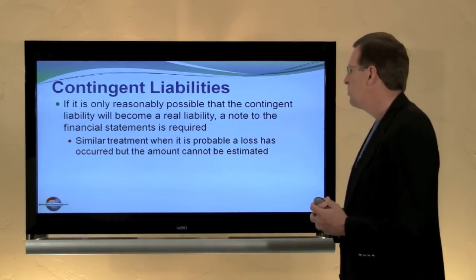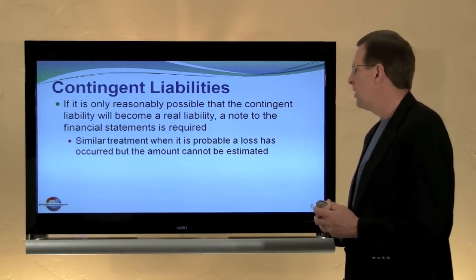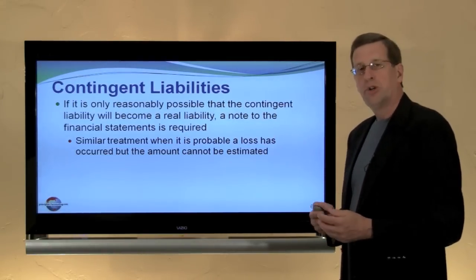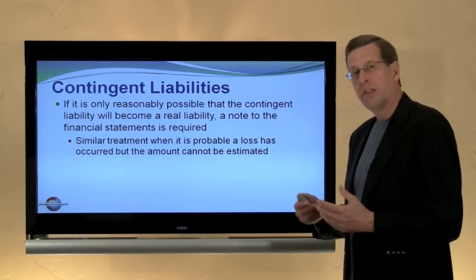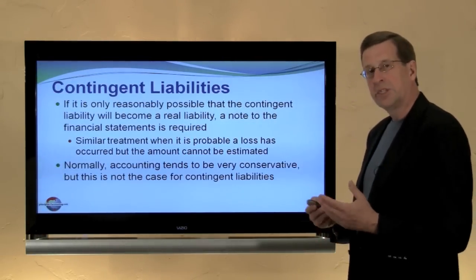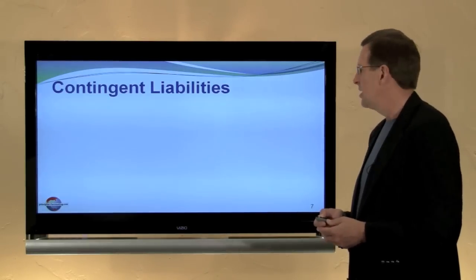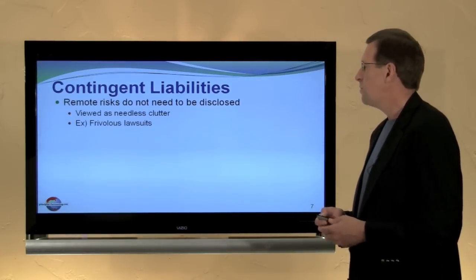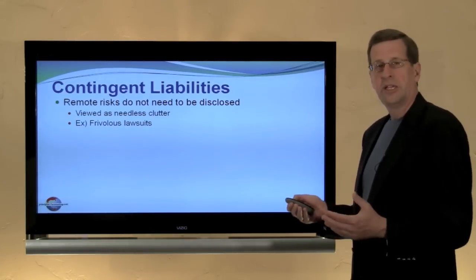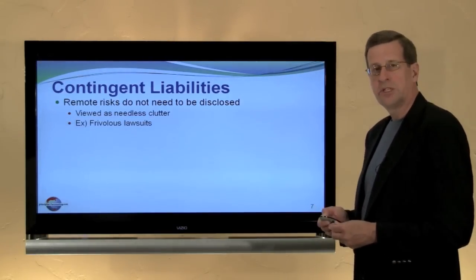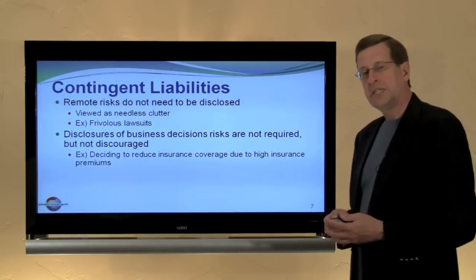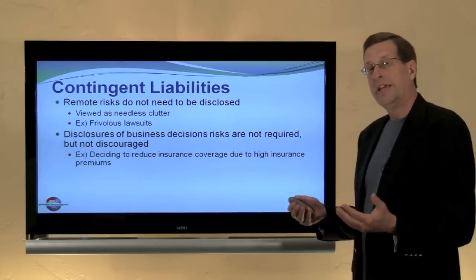If it's only reasonably possible that the contingent liability will become a real liability, a note to the financial statements is appropriate. A similar treatment is afforded when it is probable a loss has occurred but the loss cannot even be estimated. Normally accounting tends to be conservative, but that's certainly not the case with contingent liabilities. Remote risks do not need to be disclosed — they're viewed as needless clutter and distractions. Disclosures of business decision risks are not required, but neither are they discouraged.